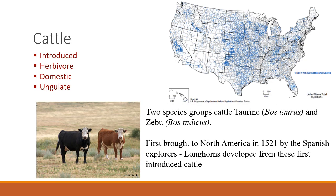Cattle, of course, are domestic animals that were introduced to North America. They're ungulates and herbivores. There are two groups of cattle: taurine cattle from European background, which would include Angus and Hereford; and another group called Zebu or Bos indicus, which came from the African continent and would include Brahmins. The actual genetics of cattle is still under debate. They were first brought to North America by Spanish explorers, and the longhorns we see today are descendants of those first cattle.